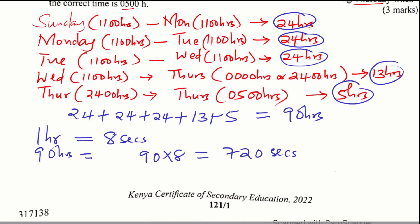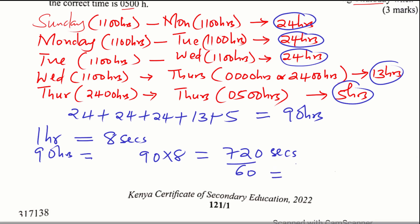So let us convert the seconds to minutes. We divide 720 by 60, which gives 12 minutes. So for all these 90 hours, the watch will have lost 12 minutes.